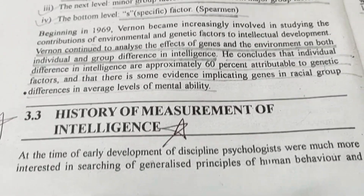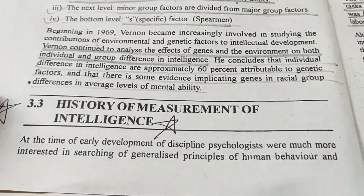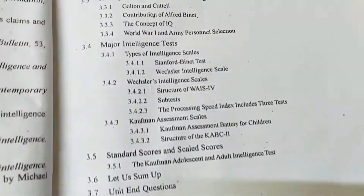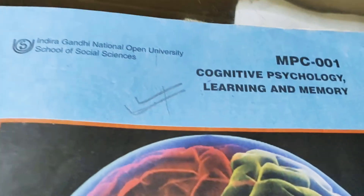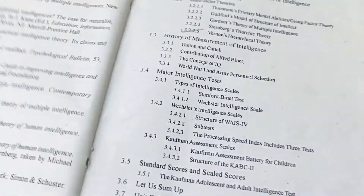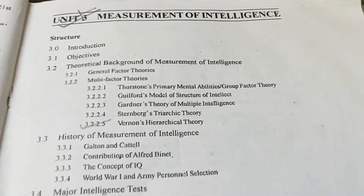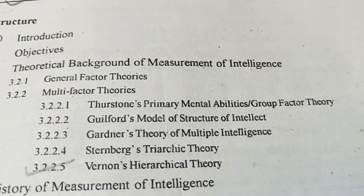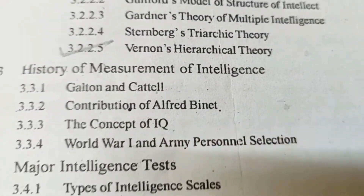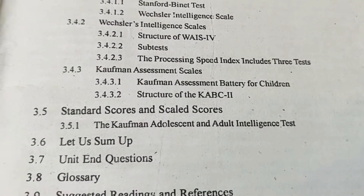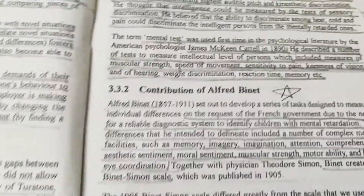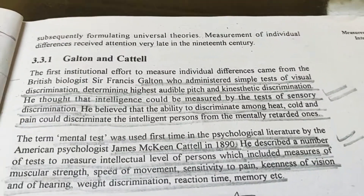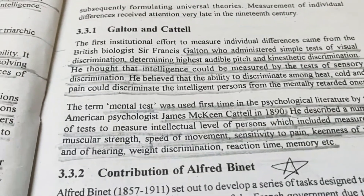Hello everyone, welcome to my channel. This is Priya Bhargav. Today we are going to do a subsection which is the history of measurement of intelligence. This subsection is from Unit 3, which is measurement of intelligence, from Block 2, MPC001, cognitive psychology, learning and memory. This chapter covers theoretical background, history of measurement of intelligence, and intelligence tests.